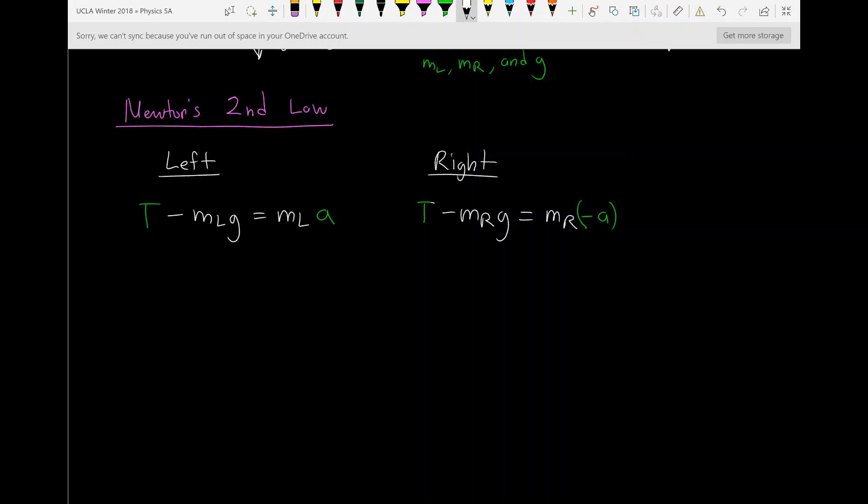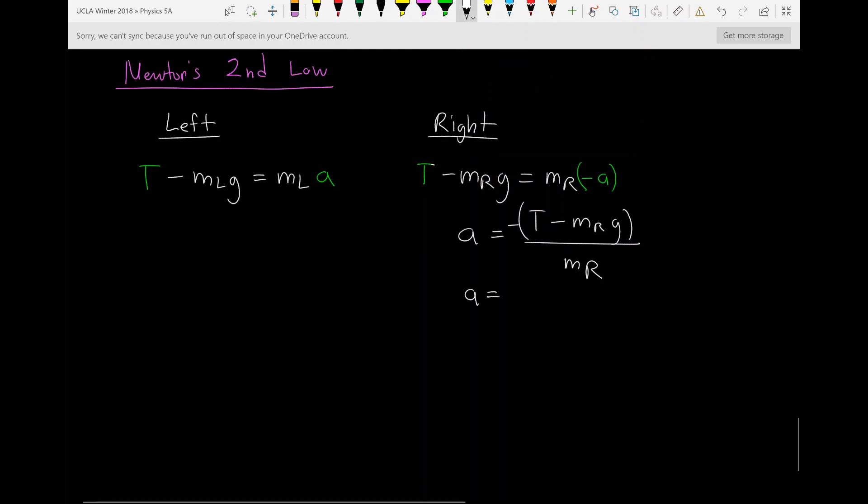Let's solve for A here. Let's get A is equal to T minus MR G, divided by MR, negative. Perfect. Now I'm just going to distribute that negative. We get negative T plus MR G over MR. This is a really useful little piece of information. Because now I can just grab this and plug it straight into this. So let's say T minus ML G is equal to ML times negative T plus MR G over MR.